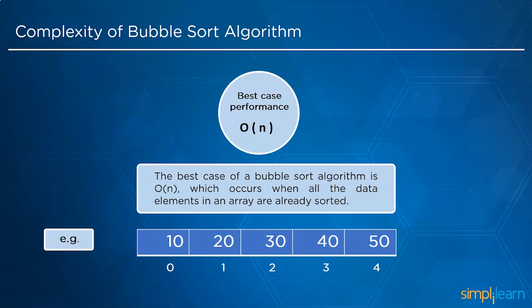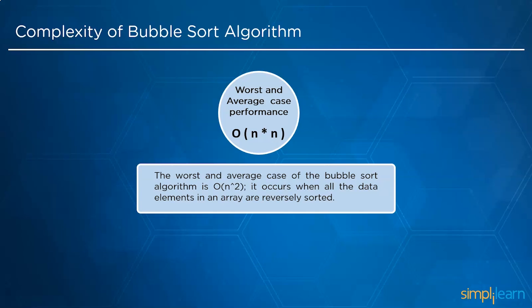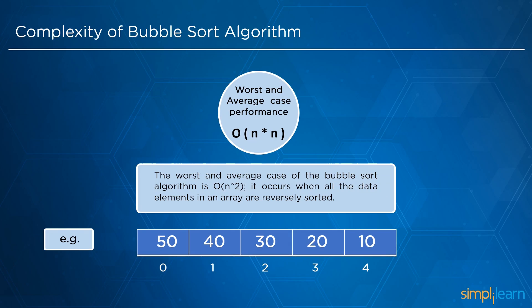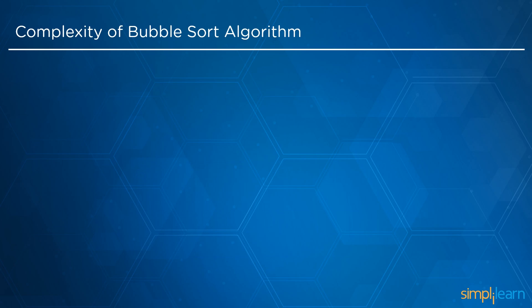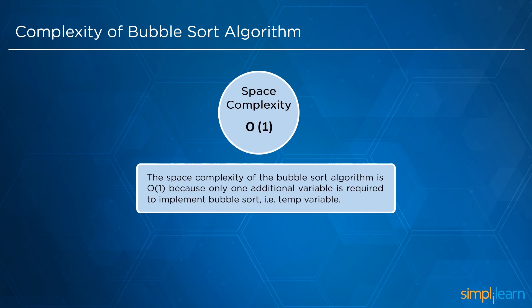The best case O(n) occurs when all data elements in the array are already sorted — for example, 10, 20, 30, 40, and 50. The worst and average case O(n²) occurs when all data elements are reversely sorted — for example, 50, 40, 30, 20, and 10. The space complexity is O(1) because only one additional temporary variable is required to implement bubble sort.